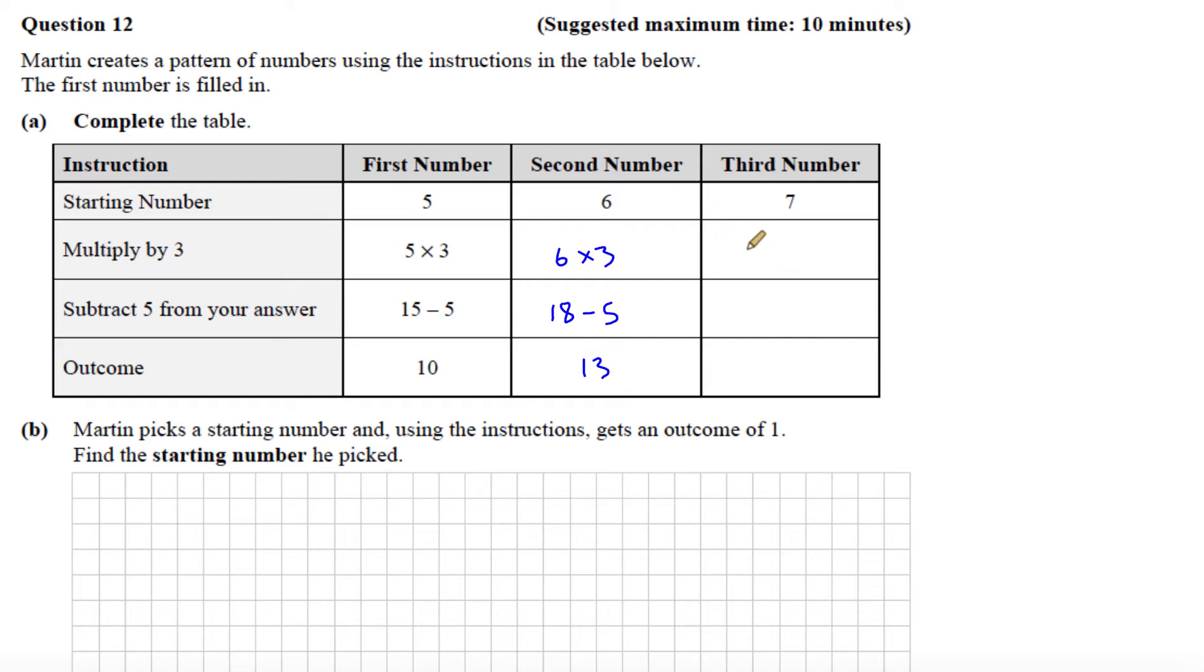Now I'm going to do it for 7. 7 multiplied by 3, that gives me 21. And subtract 5 from 21, and that leaves me with 16.